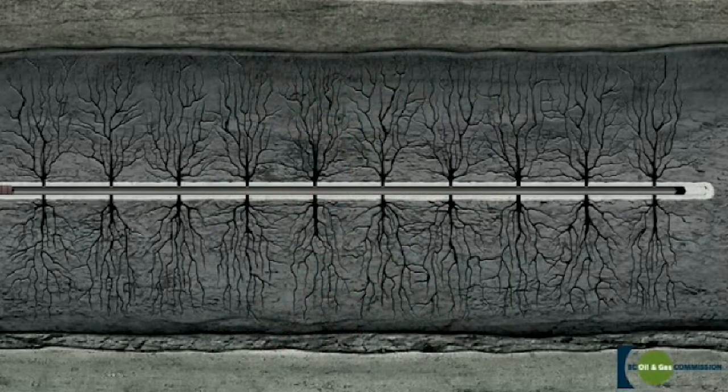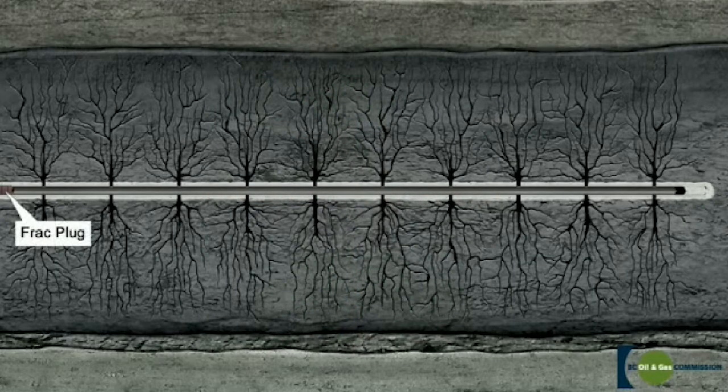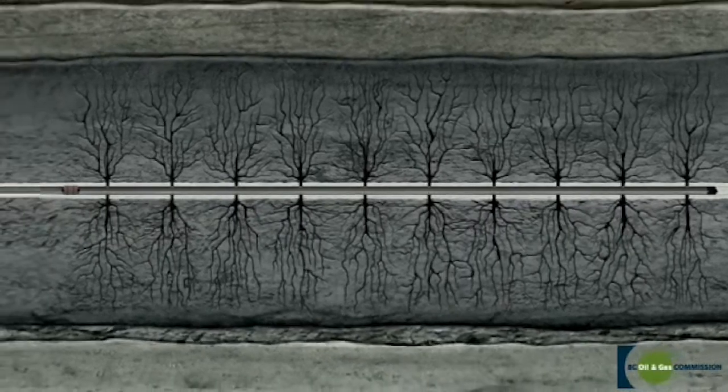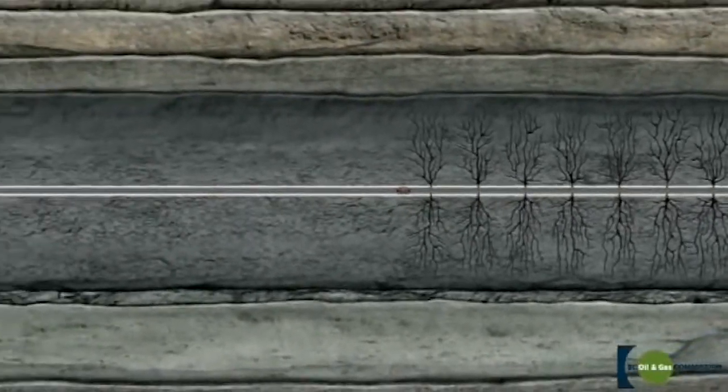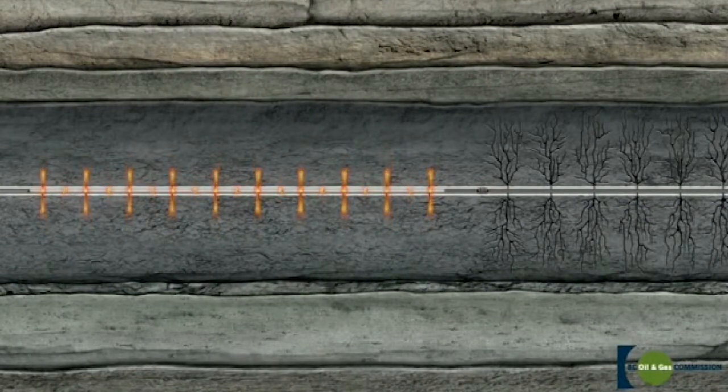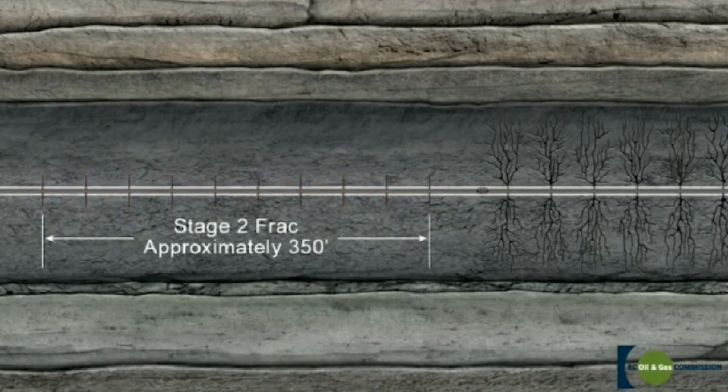Next, a temporary plug is placed at the heel or left side of the first stage frack. The plug closes off or isolates the perforated and fracked section of the wellbore so that the second stage section of the horizontal leg can be perforated and fracked.